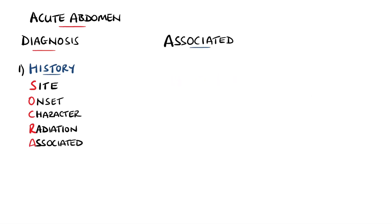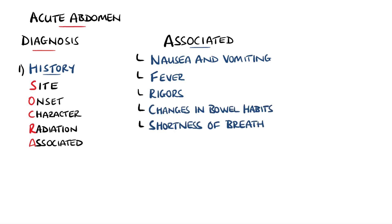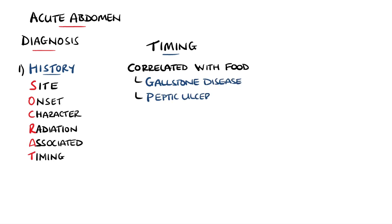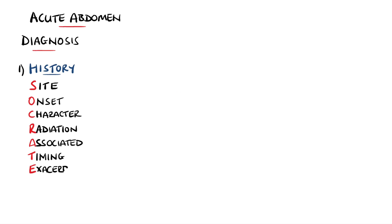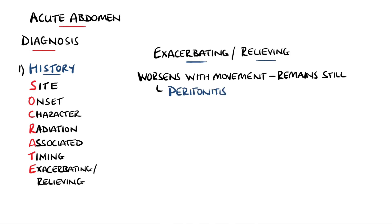Associated symptoms can provide clues on the severity, for example the presence of nausea and vomiting, any fevers or rigors, changes in bowel habits, or even the presence of shortness of breath. The T in SOCRATES is for timing; a correlation with food may indicate gallstone disease or peptic ulcer disease. E is for the exacerbating or relieving factors. In peritonitis, small movements can exacerbate the pain, causing the patient to lie still, while in renal colic, patients are often continuously moving because they cannot find a comfortable position.